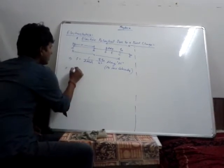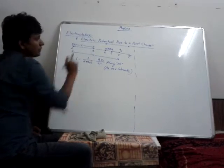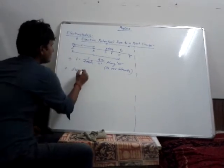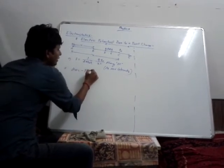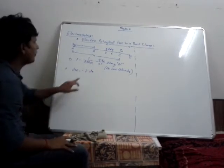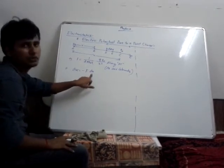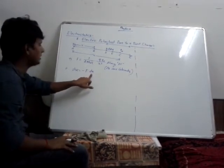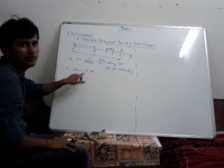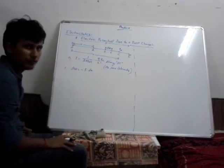Therefore the work done dW, if we are going to consider between points D and E, it will be equal to minus F into dx, where F is the force and dx is going to be the displacement. The minus symbol represents work done in the opposite direction of the force.